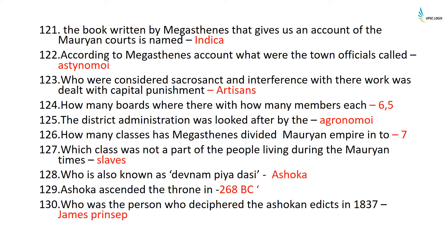Megasthenes divided Mauryan society into seven classes. Slaves were not part of the people living during Mauryan times. Ashoka is also known as Devanampiya Priyadarshi. Ashoka ascended the throne in 268 BC. The person who deciphered the Ashokan edicts in 1837 was James Prinsep.